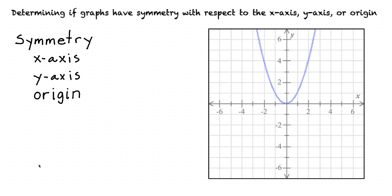Let's check to see if this graph has symmetry with respect to the x-axis, the y-axis, the origin, or none of those. First, let's try the x-axis. Imagine the x-axis is a mirror. Is the part above the x-axis a reflection of the part below the x-axis? No, there's nothing below the x-axis, so that's definitely not true.